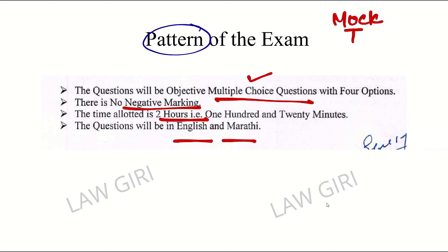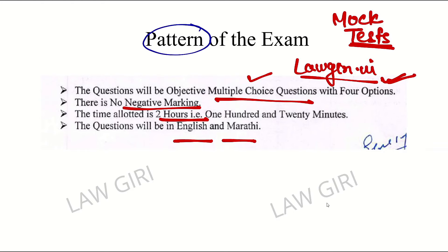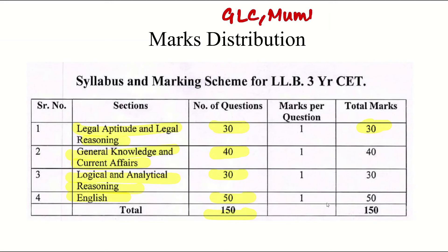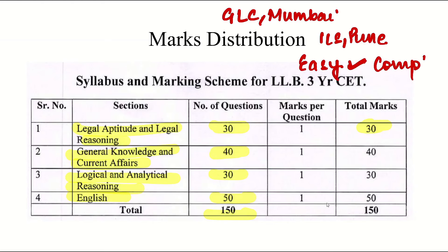We also provide mock tests on Loggiri.in — the link is in the description box. Now, marks distribution: Legal Aptitude and Legal Reasoning is 30 questions and 30 marks, General Knowledge and Current Affairs is 40 questions, Logical and Analytical Reasoning is 30, and English brings the total to 150 marks. The level of exam is very easy but competition is hard, so take every subject seriously. If you want admission in GLC or ILS, every subject should be equally important.